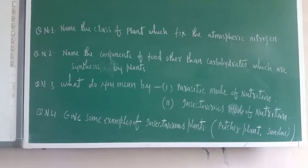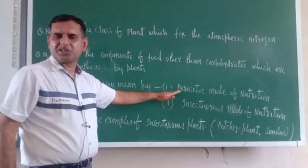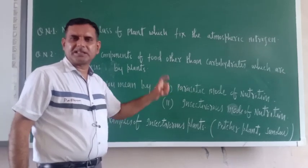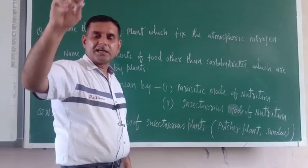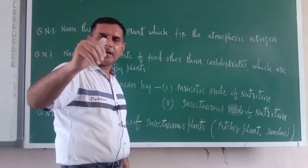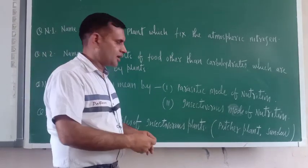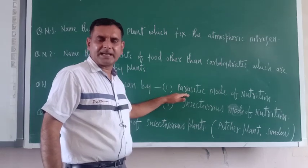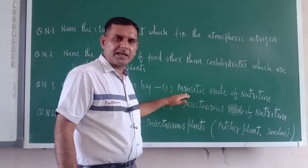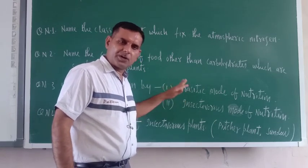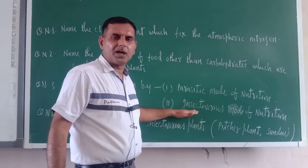I hope you understood the insectivorous mode of nutrition and the parasitic mode of nutrition. The best example of parasitic mode is Cuscuta, also known as Amarbel — the yellow plant you may have seen climbing on other green plants. Since it is a chlorophyll-less plant, it absorbs food from the host plant. In parasitic mode, plants cannot synthesize their own food and take it from a host plant. In insectivorous mode, as seen in the video, the plants trap and digest insects for nitrogen.